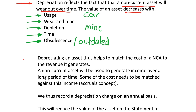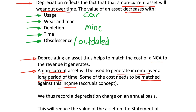Depreciating our non-current assets helps to match the cost of a non-current asset to the revenue that it generates. Non-current assets are long-term assets that generate income over a long period of time, so some of the cost going into the asset needs to be matched against that income. This ties into the accruals concept, where we match incomes to expenses, which was discussed in the previous video.